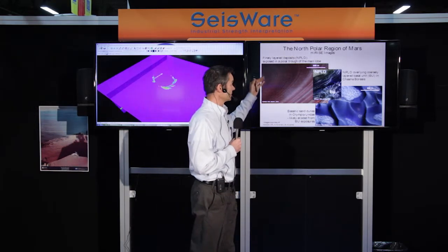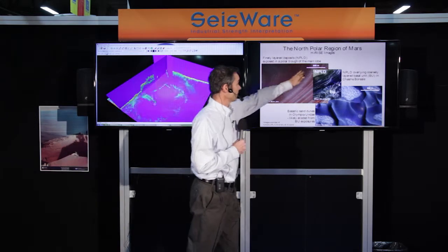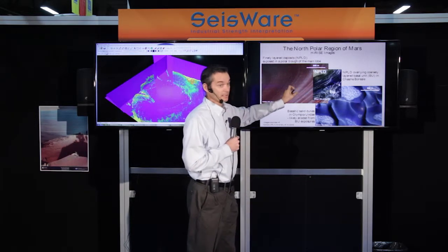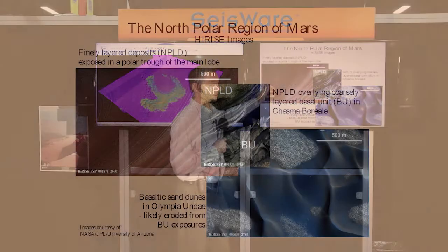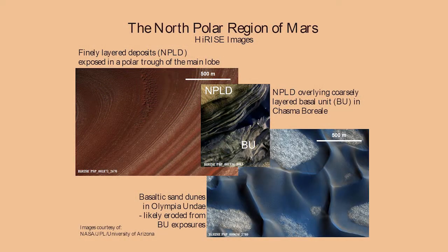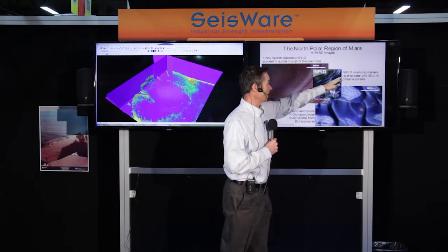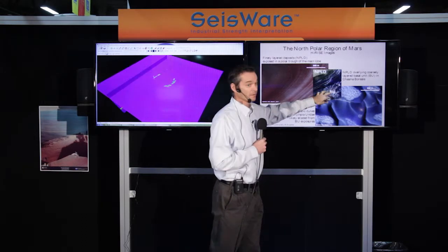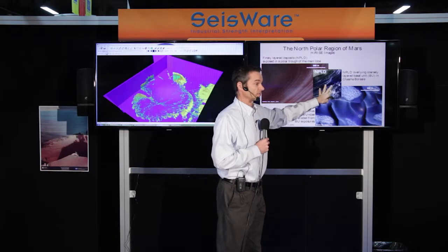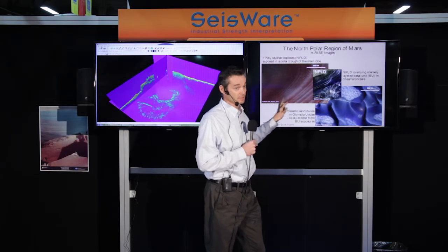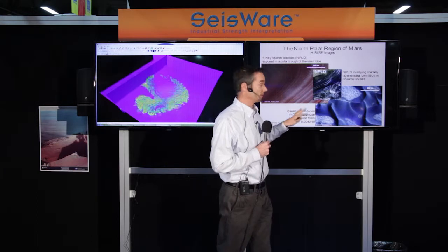These are high-resolution images from a camera on the same spacecraft, with about a 500-meter scale bar. These show the finely layered deposits in the upper part of the section. The red coloration is due to the inclusion of dust from the atmosphere. This center image shows the finely layered deposits overlying the basal unit — you can see dark sands eroding out of the basal unit. The basal unit is thought to be the source for all of the sands that surround the big stack of layered deposits.